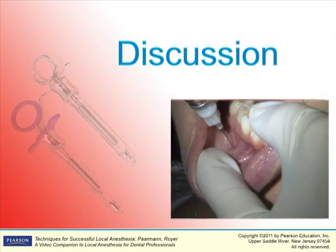A possible complication of this injection is pain if bone is contacted. Avoid pain from contacting the periosteum by depositing a small amount of solution ahead of the needle and inserting at the very depth of the mucobuccal fold. Other complications might include hematomas or post-operative discomfort.